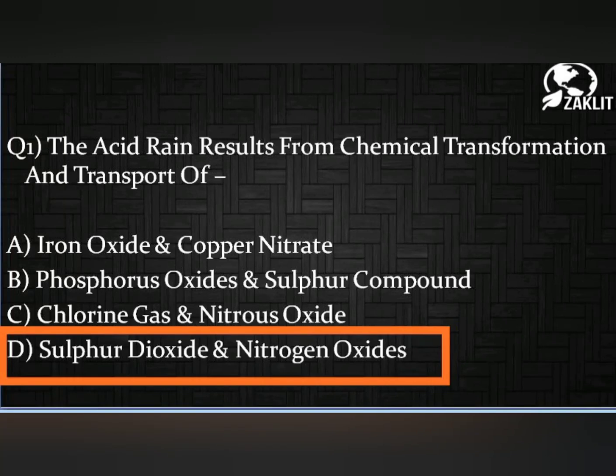The first question was: acid rain results from chemical transformation and transport of — the correct option is option D: sulfur dioxide and nitrogen oxides.